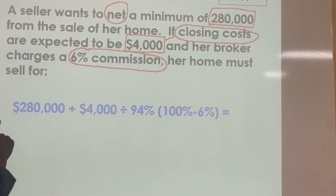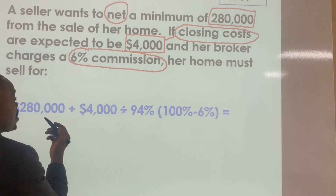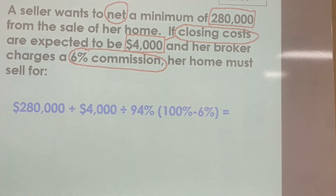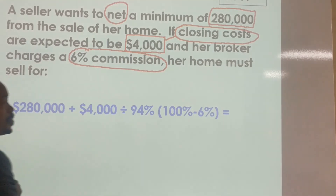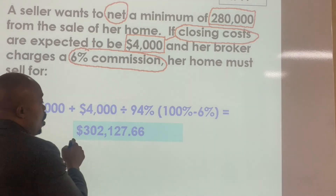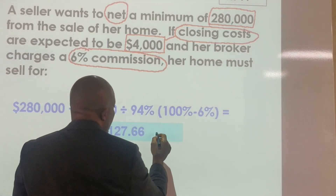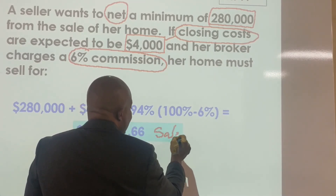Remember, 100% minus the 6% commission. So the sales price is 100% minus 6%. We're going to take $280,000 plus $4,000 divided by 94%. That will give us the sales price — the amount the house must be sold for.